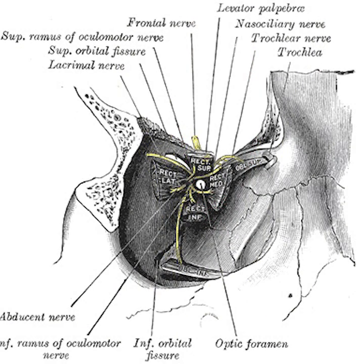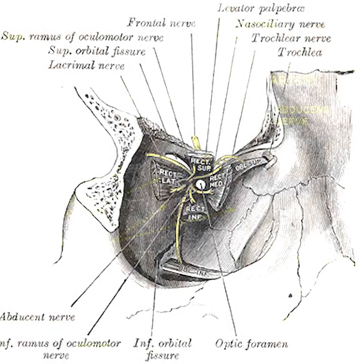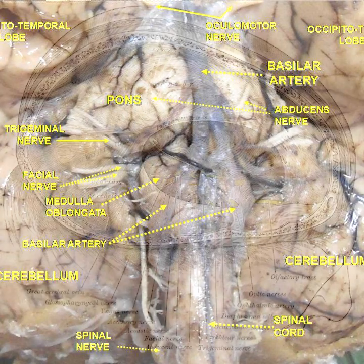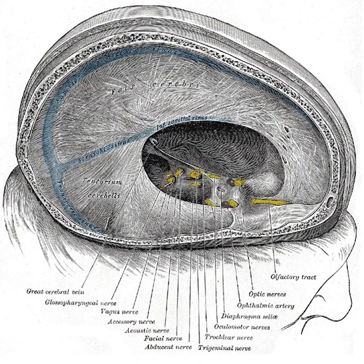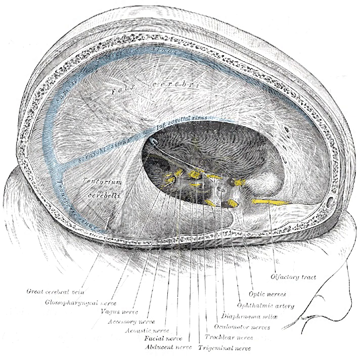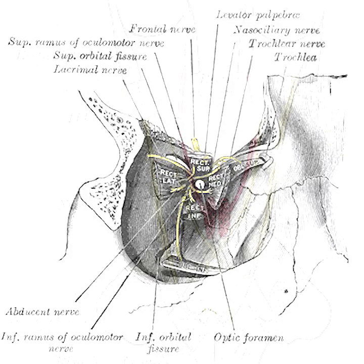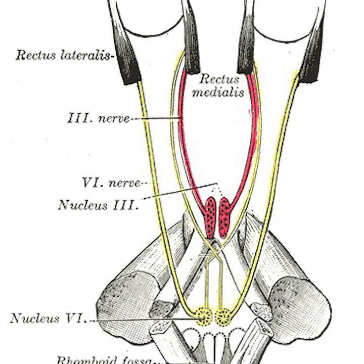The nerve runs upward between the PONS and the Clivus, and then pierces the dura mater to run between the dura and the skull through Dorello's canal. At the apex of the petrous part of the temporal bone, it makes a sharp turn forward to enter the cavernous sinus. In the cavernous sinus, it runs anteriorward alongside, infralateral to, the internal carotid artery.